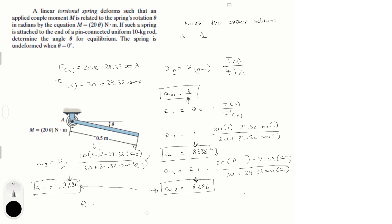So theta = 0.8286 radians. To convert to degrees: theta = 0.8286 × (180/π) = 47.5 degrees. This is the final answer, and that is how we solve this type of equation that has the variable both alone and inside a trigonometric function.